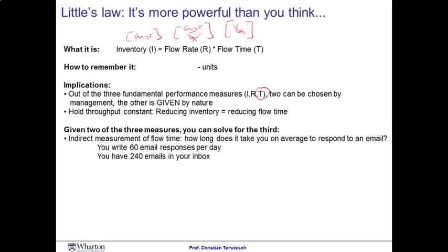Think about how long it takes you on average to respond to your email. This is not a number most of us routinely track. However, you can compute it quite easily. If you have 240 emails in your inbox, that is your inventory. If you're writing 60 emails per day, that is your flow rate. Little's Law tells us that your average flow time is four days. Some emails you might respond to faster, some slower, but on average it takes four days to respond to an email.